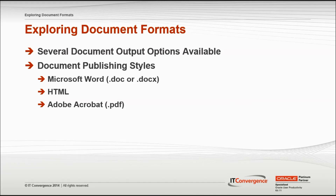The UPK Developer allows the user to publish content through various document formats, which are predefined documents that can appear in Microsoft Word (.doc or .docx), HTML, and Adobe Acrobat .pdf formats. There are several document output options available for publishing in the Publishing Wizard. In this tutorial we are going to walk you through the different options available and to which document formats they apply.